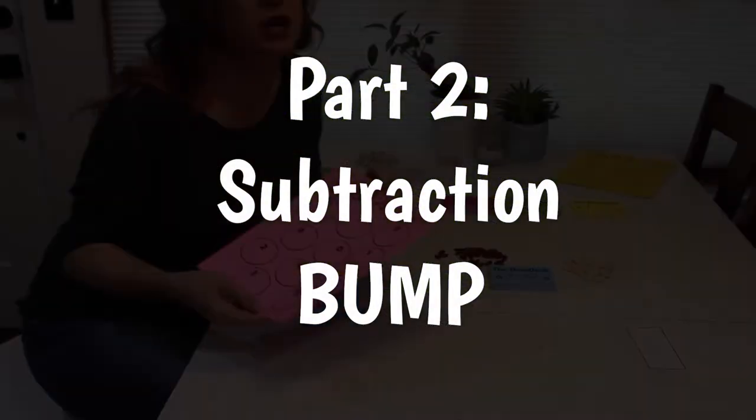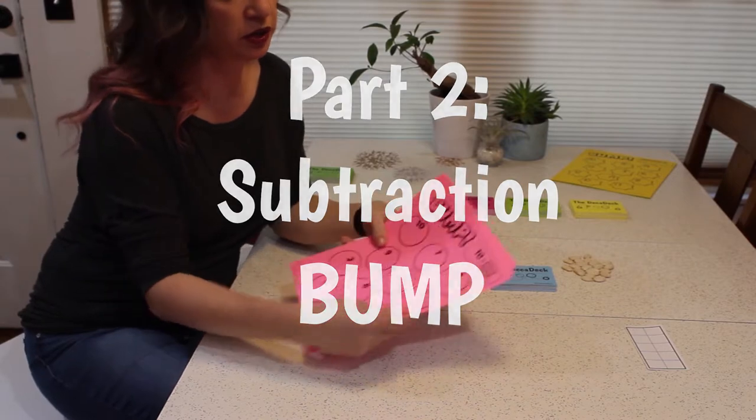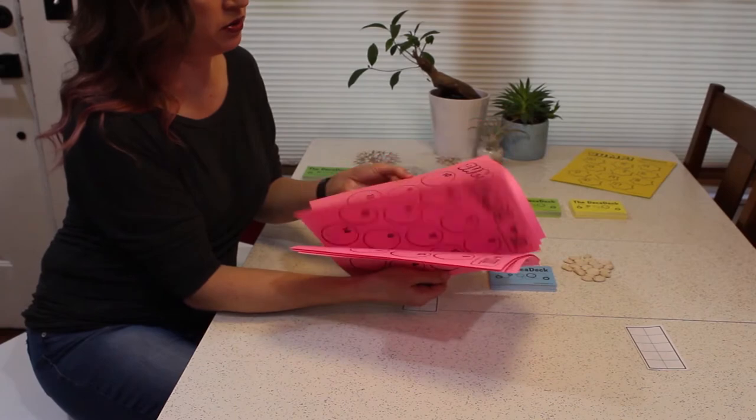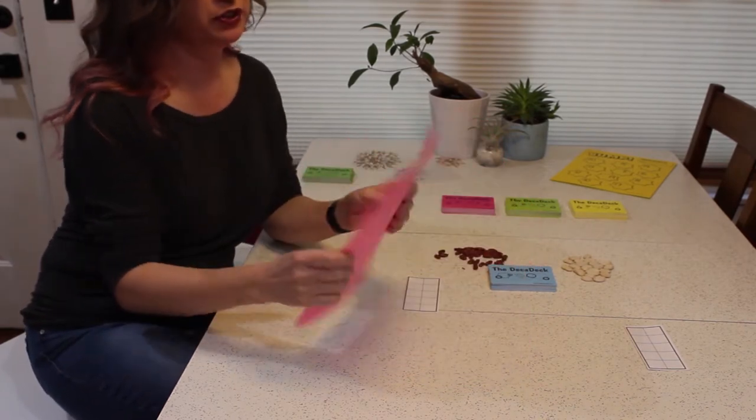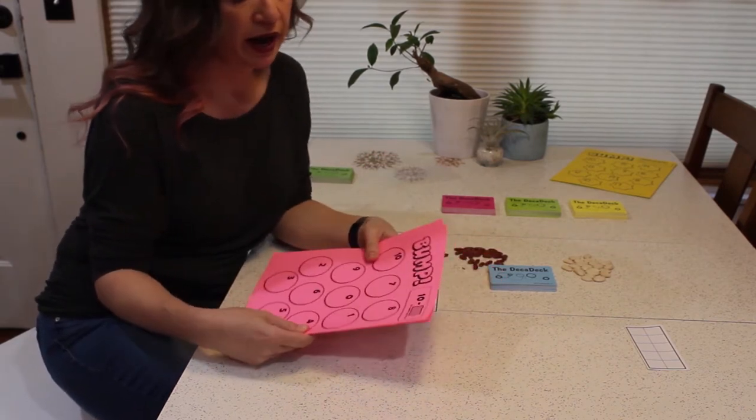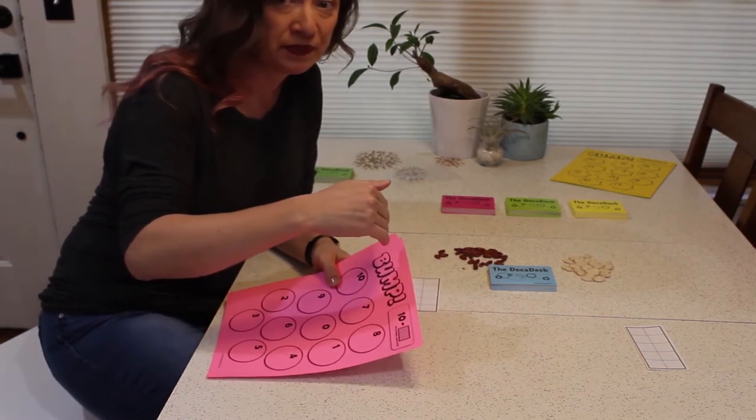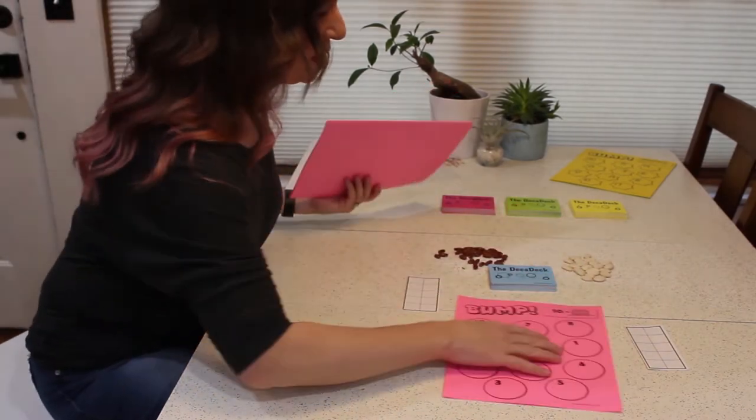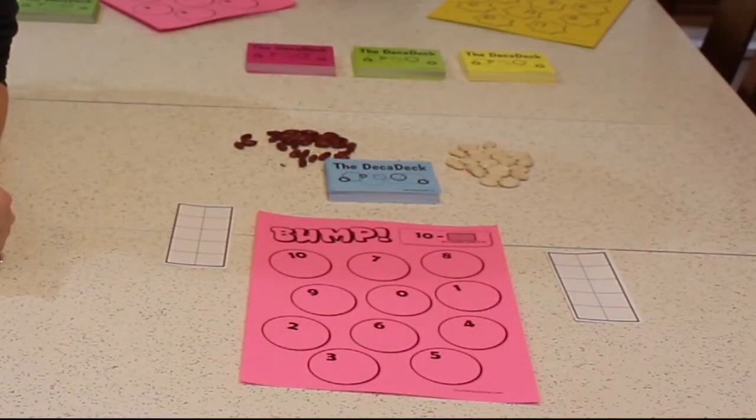This is the subtraction set of bump cards, and these cards go all the way from 10 minus a Decadec card all the way to 20 minus a Decadec card. So if you're just starting playing this with maybe a first or a second grader or a third grader, I would start with the 10, then go to the 20, and then try some cards in between. So Henry and I are going to model with the 10 minus a Decadec card subtraction game. Are you ready? You go ahead and start.